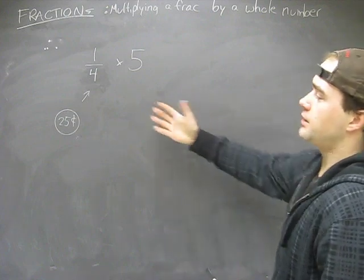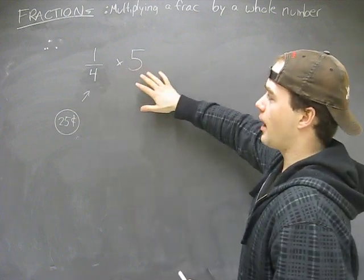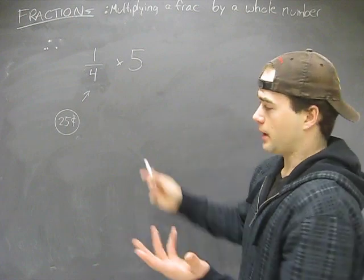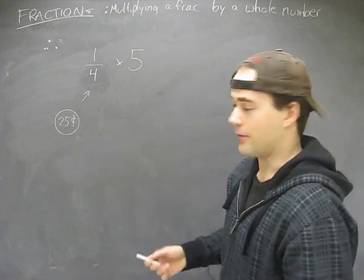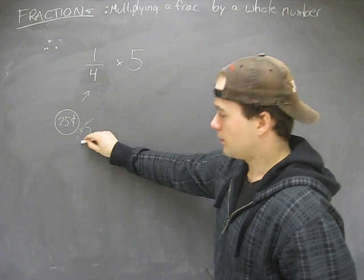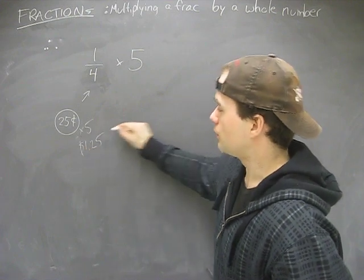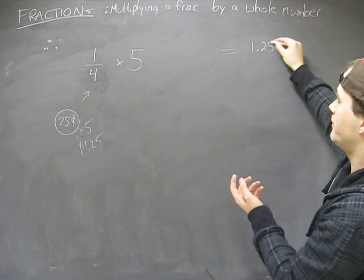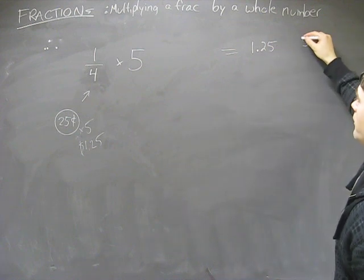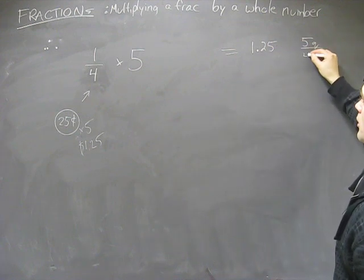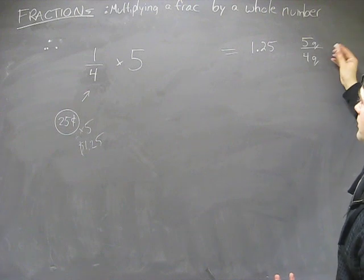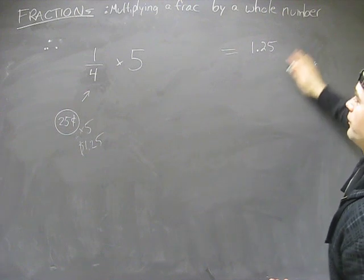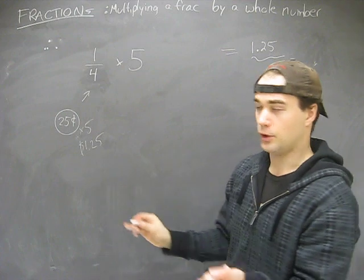Okay? So this is one quarter times five. And really you can say, okay, that's easy. I'd have $1.25 in my pocket because five of those is $1.25. So we know that somehow the answer is going to be $1.25 or five quarters where four quarters is $1. We know what's going to be that just because we know our money.